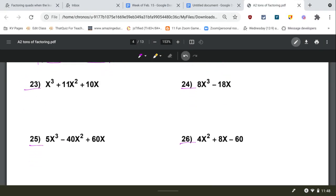And then on 23 and 24, looks like you would factor out an x on those. So you would just take an x away from each of those.